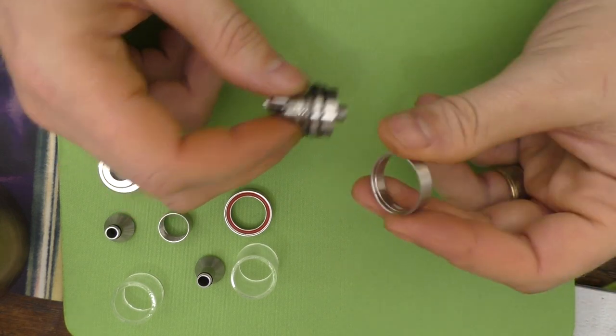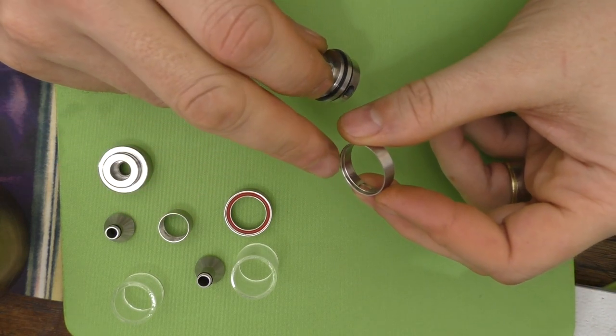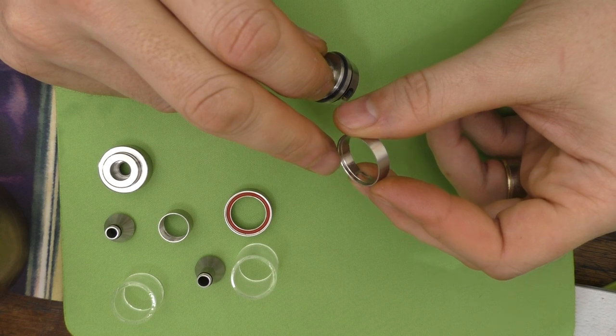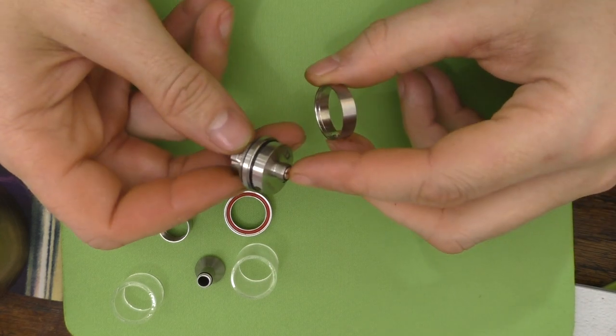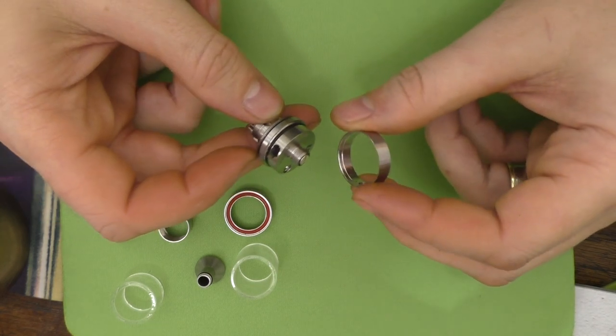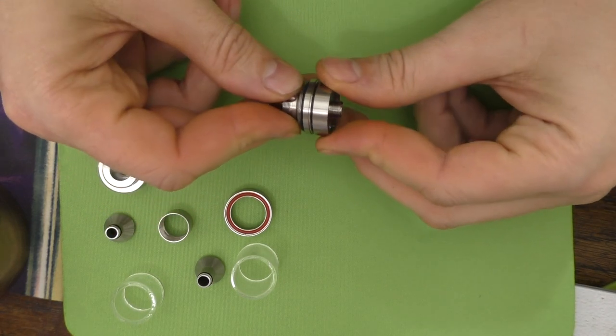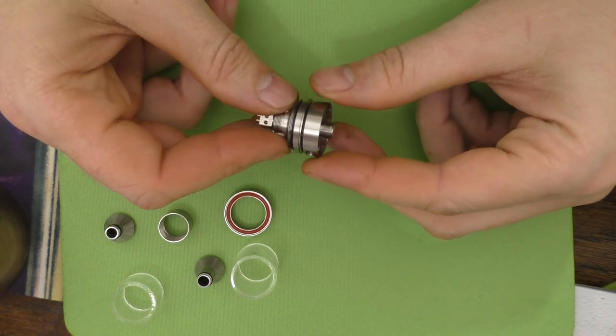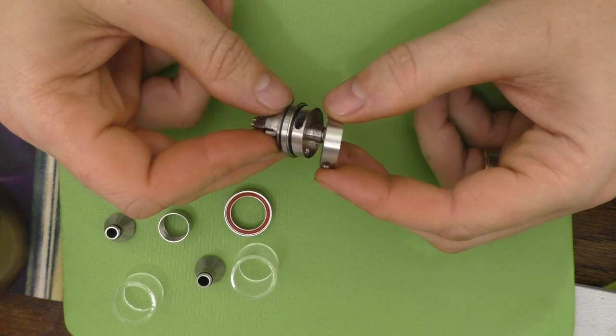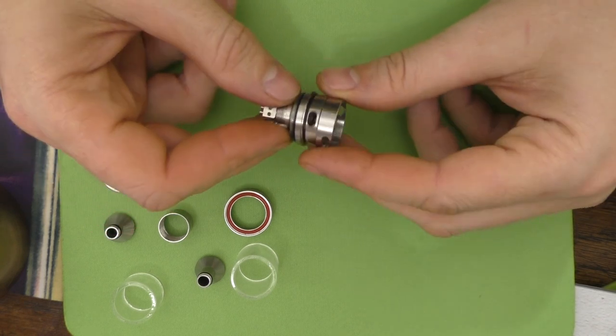That ring there, you'll see the little indent inside here. So that goes over the O-ring. If you try and put it on that way, don't force it because you'll just shred your O-ring. It only goes on one way.